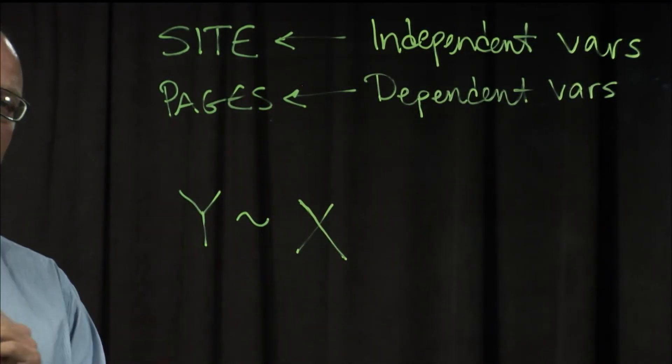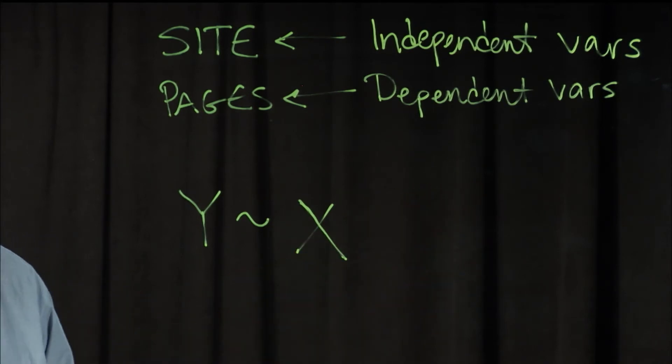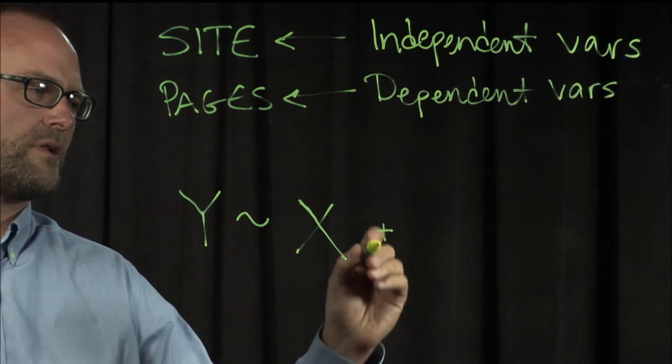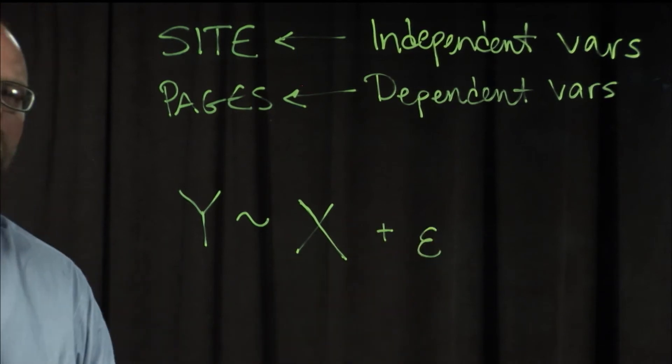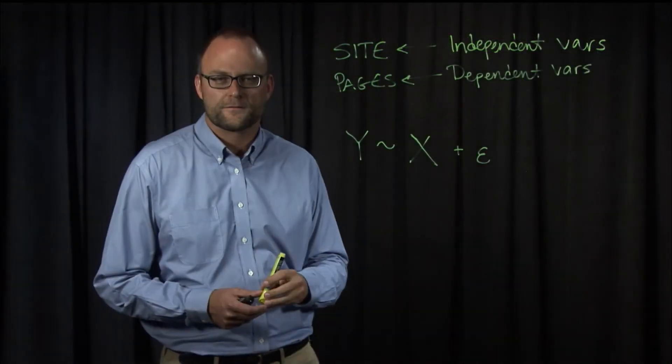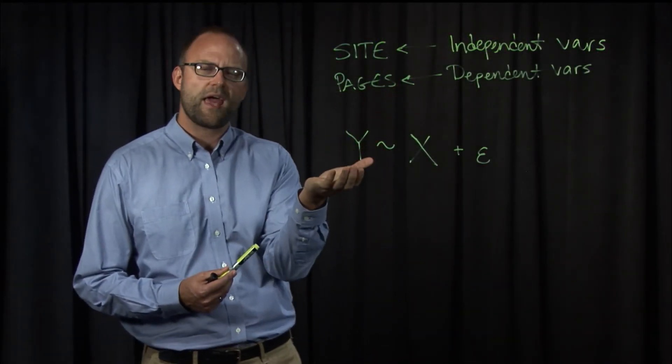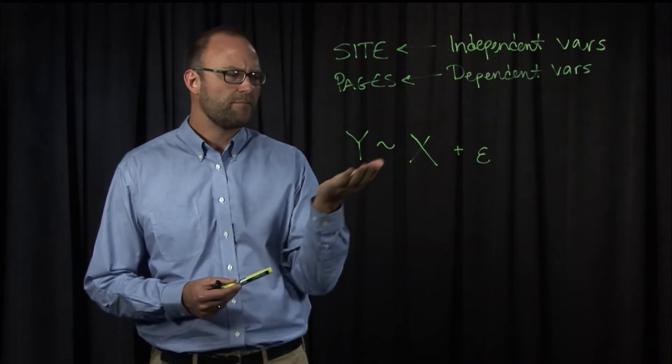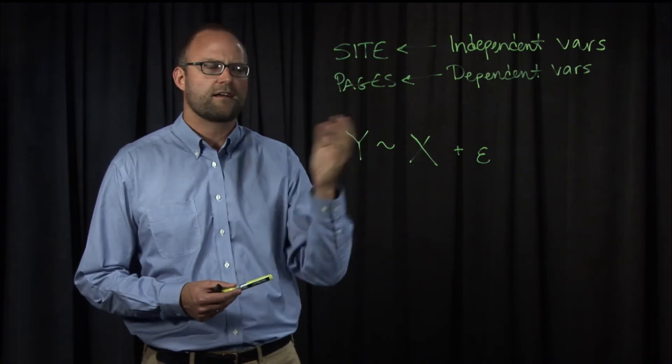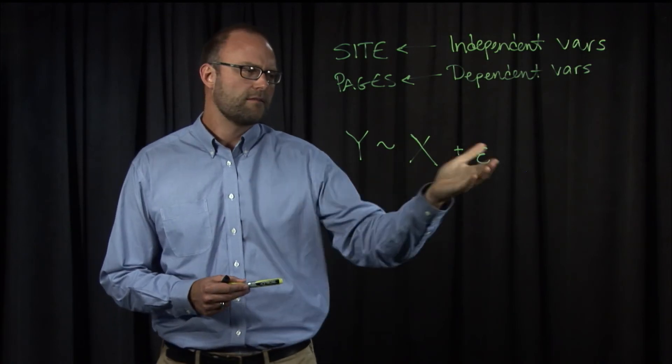But y is related to x and then we have to add plus epsilon, which is traditionally measurement error. The idea here in our case would be that the number of pages viewed, we think, might depend on the value that x takes. Is x website A or B plus measurement error?